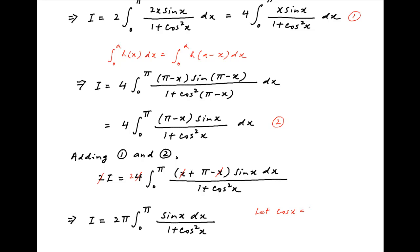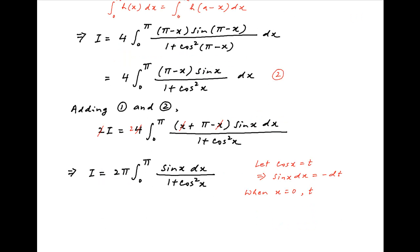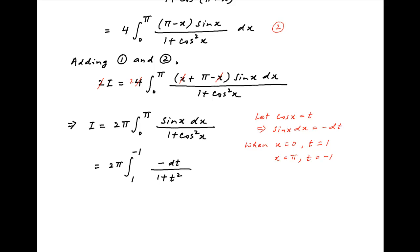Now let cos x equal t. Taking the derivative of both sides, minus sin x dx equals dt. When x equals 0, the lower limit of integration t equals 1, and when x equals pi, the upper limit of integration t equals minus 1. Therefore I is equal to 2 pi times the integral with t going from 1 to minus 1 of minus dt divided by 1 plus t squared. Reversing the limits introduces a minus sign which cancels with the minus in the integrand, so I equals 2 pi times the integral from minus 1 to 1 of dt upon 1 plus t squared.